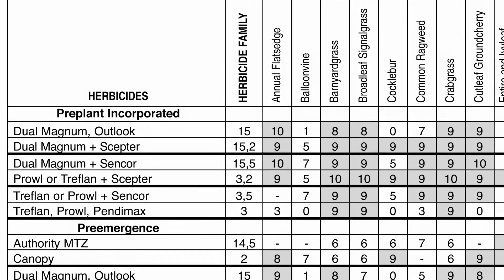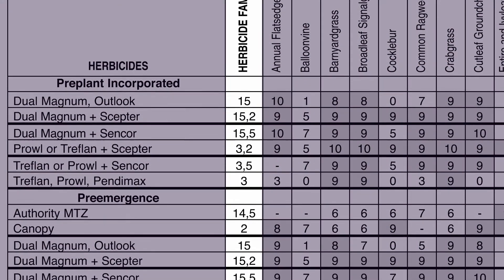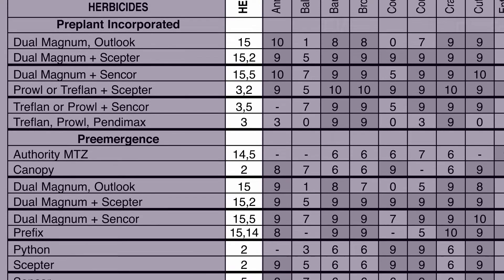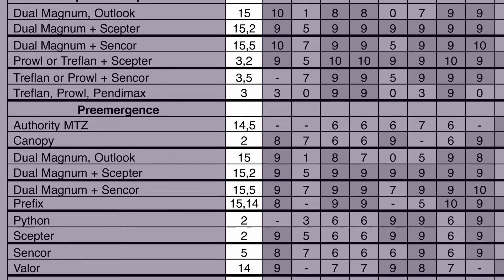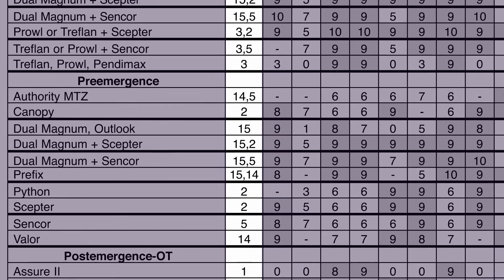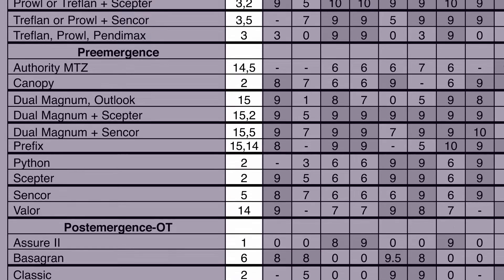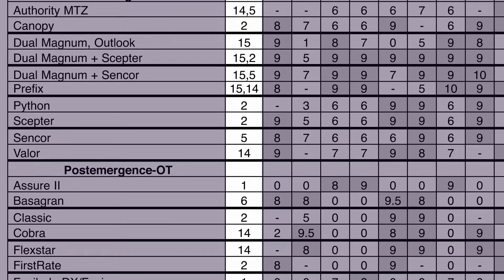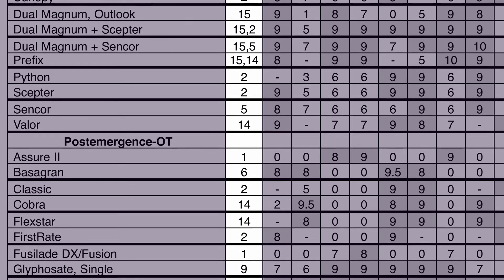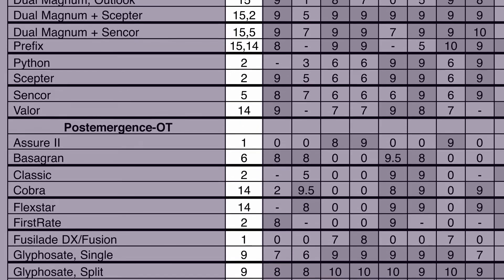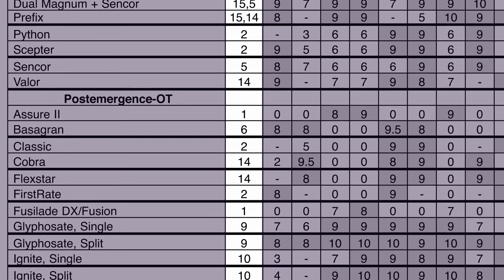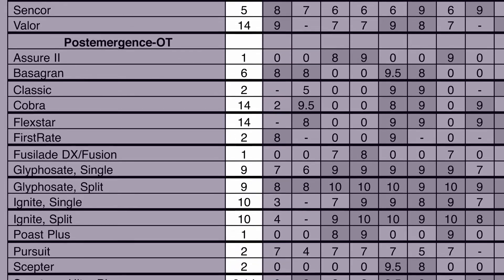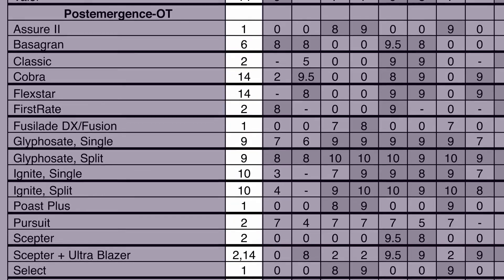For example, on page 36 of the weed response ratings for soybean herbicides, the first column is herbicide family. Herbicide family is represented by a simple number. This number again refers to the way in which that herbicide controls weeds. When developing a resistance management plan, use as many herbicides with different numbers that are still effective on the weeds that you have in your field.